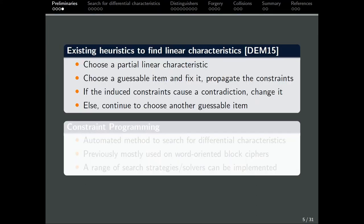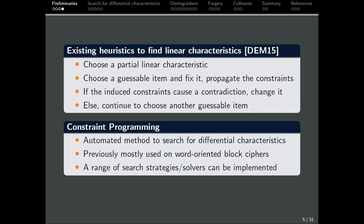In a previous work, Dobraunig et al. introduced a tool in their paper titled Heuristic Tool for Linear Cryptanalysis with Applications to CAESAR Candidates. The idea is to first choose a linear characteristic, with some variables already fixed. Then, from the remaining unfixed variables, they would guess one of them, and add them into the linear characteristic. Now, we will propagate what are the additional constraints that were caused by this move. Suppose that there is a contradiction between the new constraints and the one that we already had so far, we simply backtrack and choose another variable. If there is no contradiction caused by this move, we continue guessing.